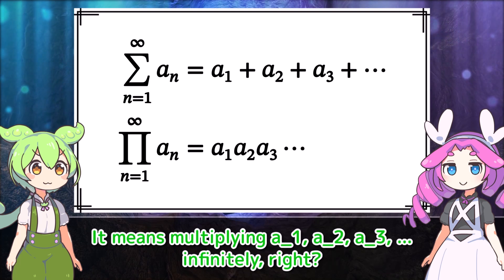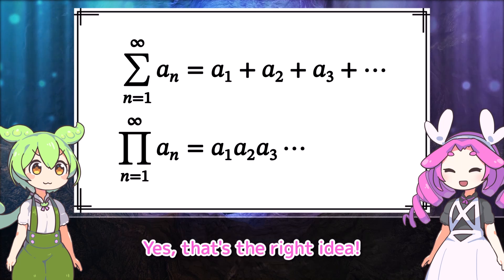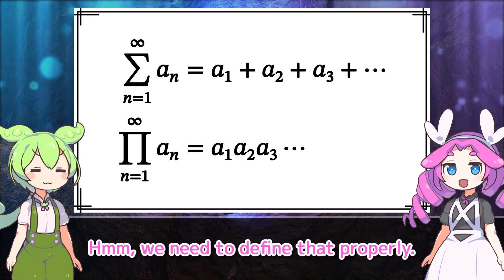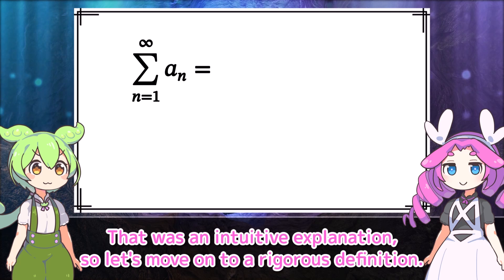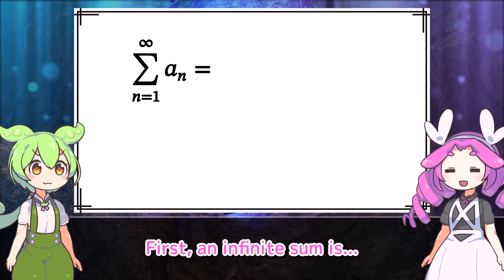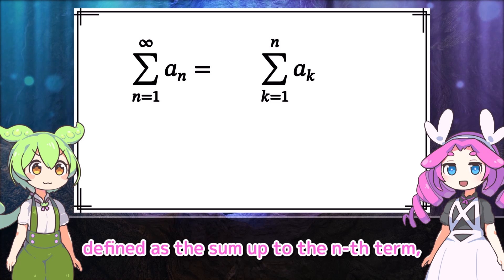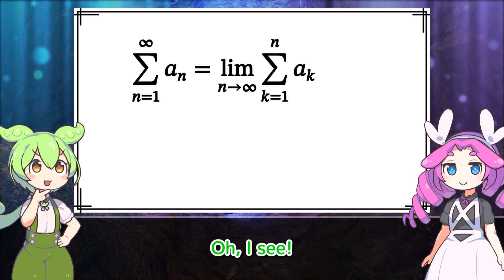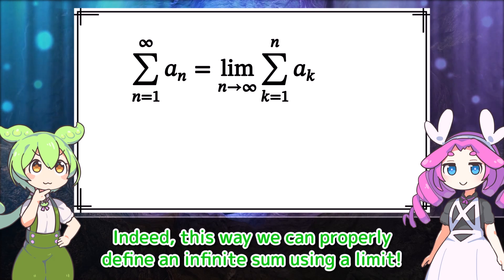What about this other expression? This symbol is the multiplication version of sigma. So it means multiplying a_1, a_2, a_3, and so on infinitely, right? Yes, that's the right idea. But what exactly does it mean for multiplication to continue infinitely? We need to define that properly. That was an intuitive explanation, so let's move on to a rigorous definition. An infinite sum is defined as the sum up to the nth term, with n approaching infinity. Indeed, this way we can properly define an infinite sum using a limit.